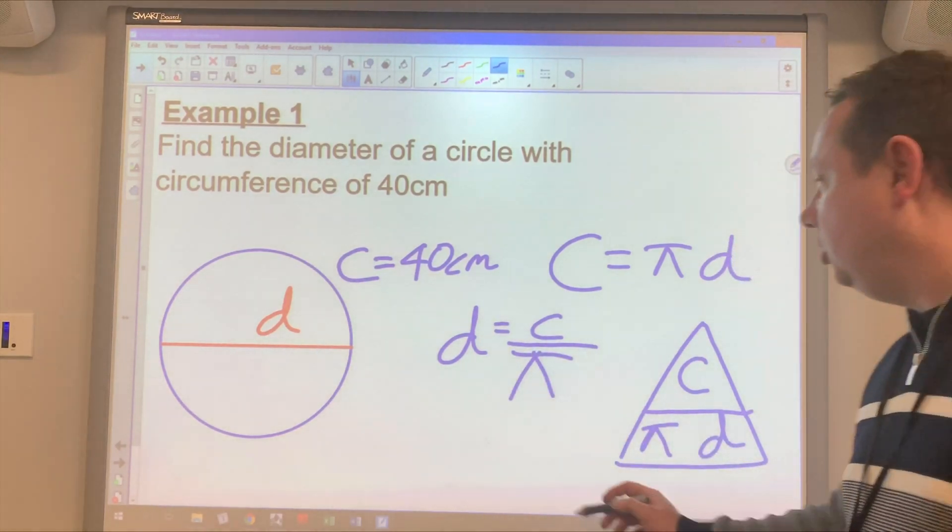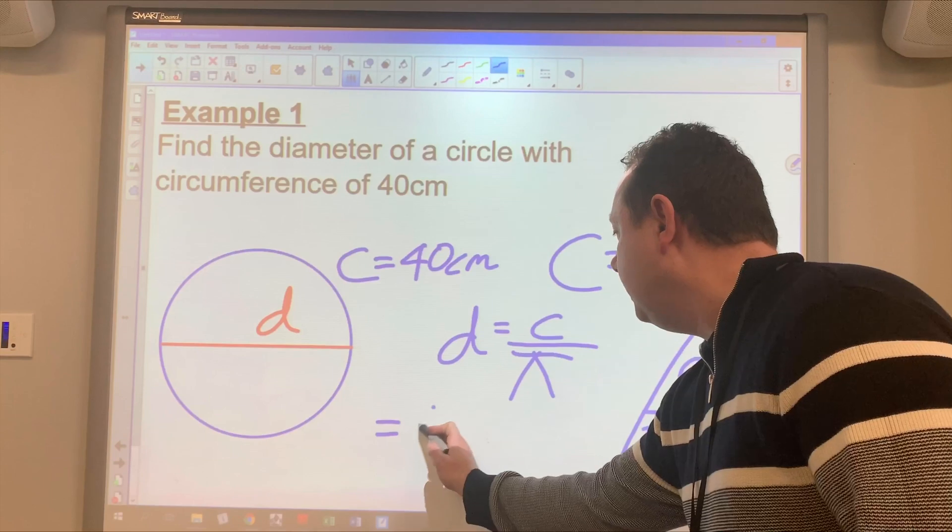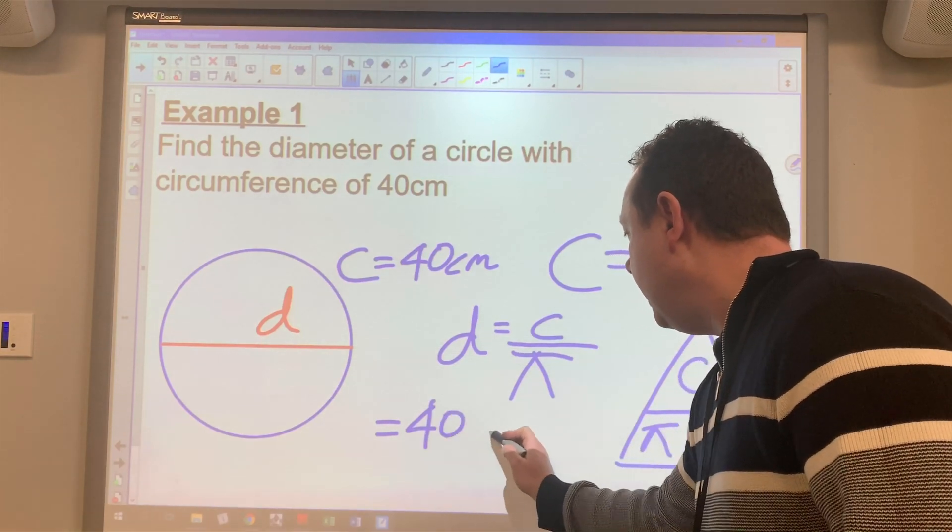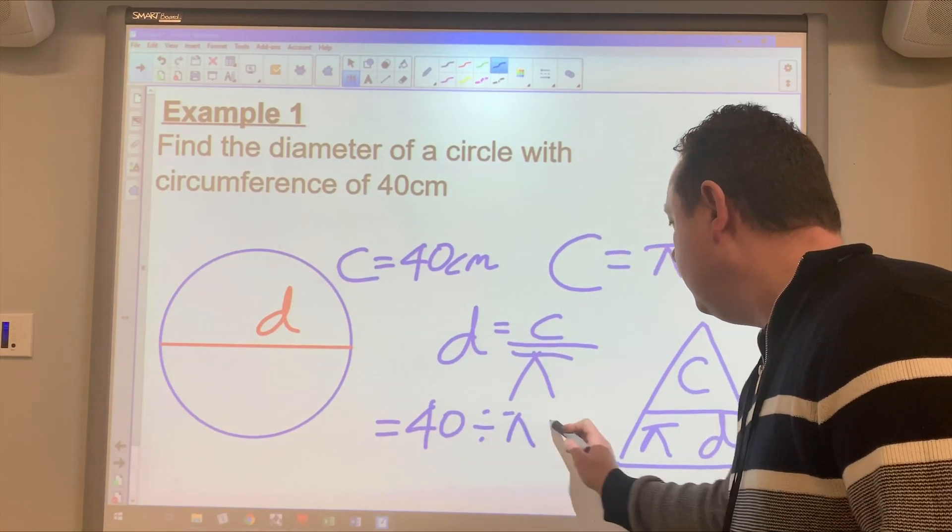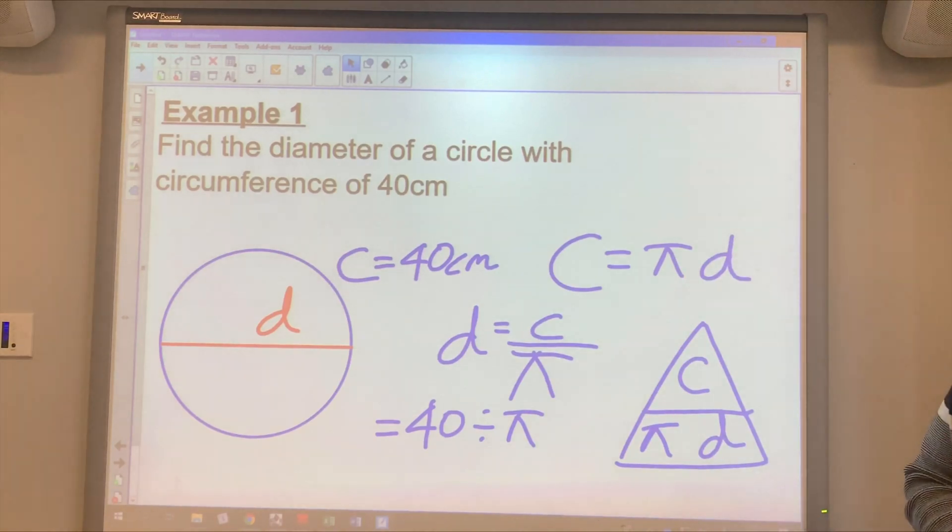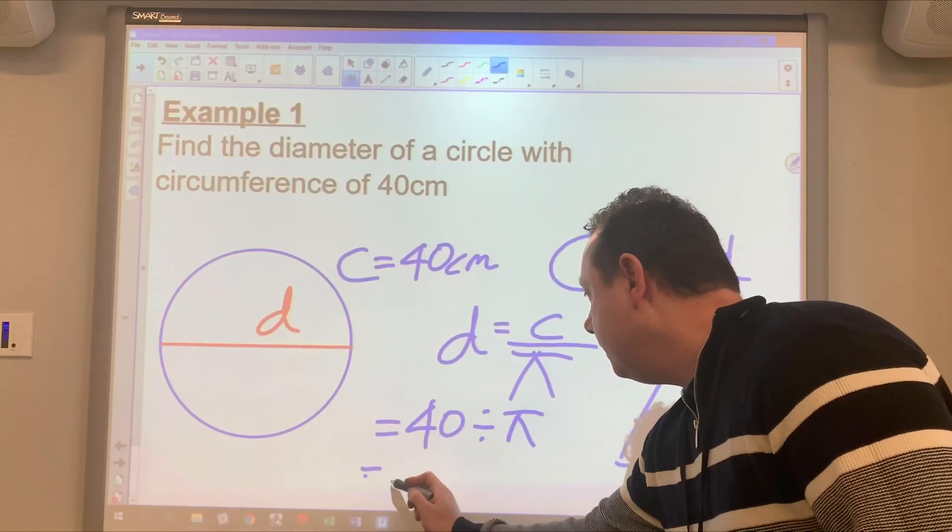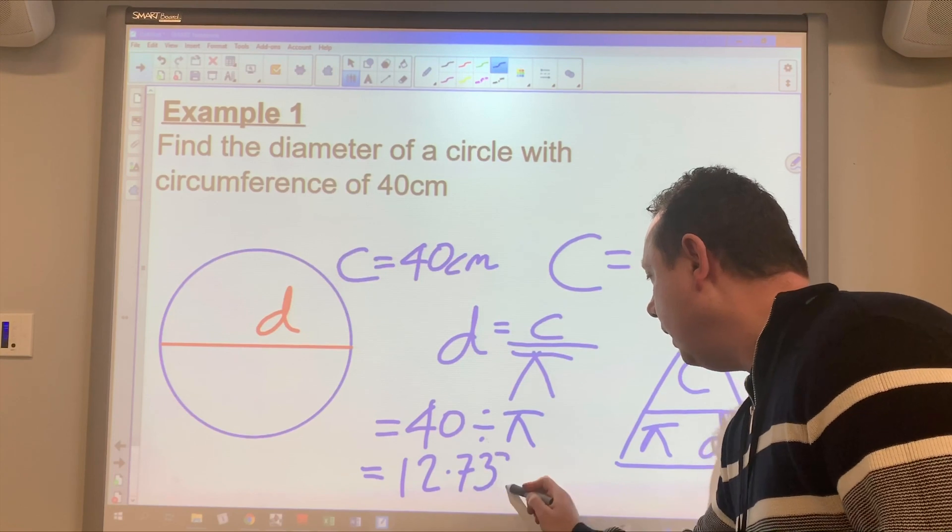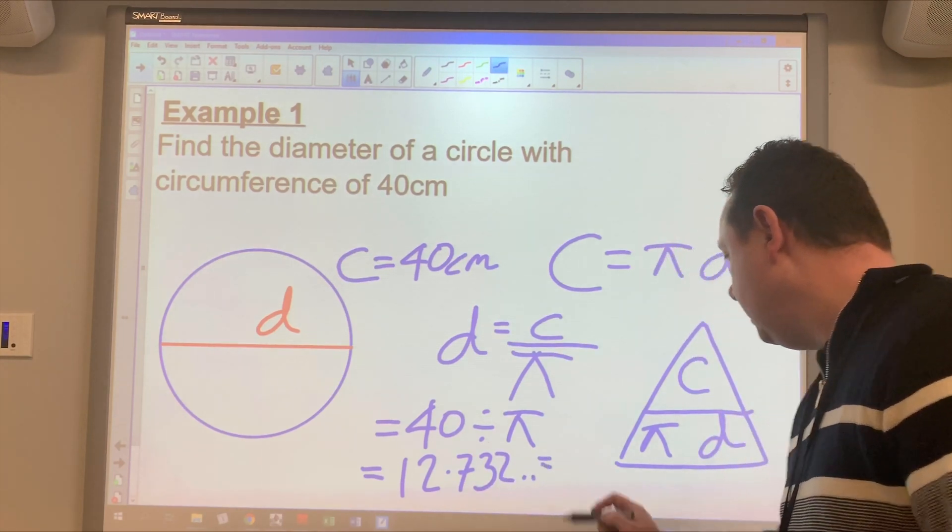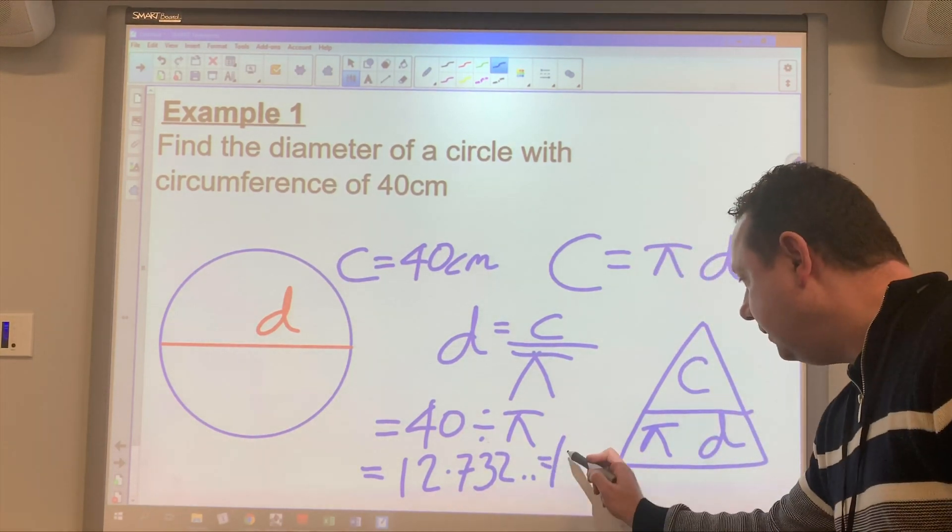I'm now going to substitute. So that is 40 divided by pi. And obviously, we'll use a calculator to work that out. So that's just 12.7. Which to one decimal place is just 12.7.